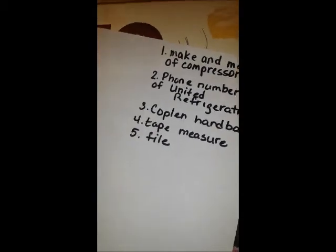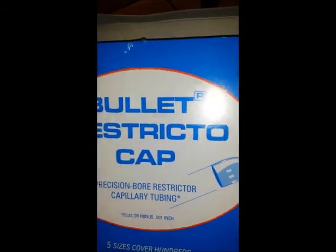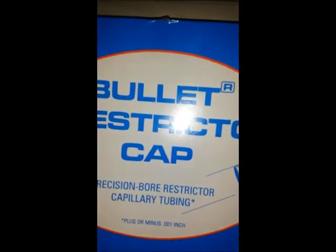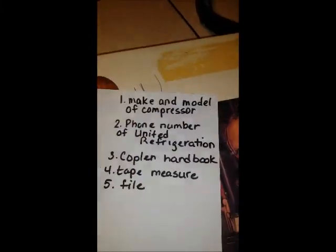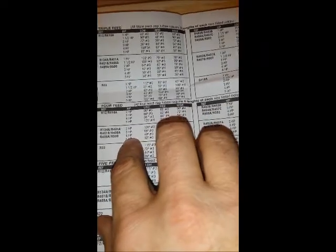You take that information and you buy one of these kits right here. The kit has a capillary tube inside of it. You open it up and take the capillary tube out. But what's more important is there's a chart there. And on that chart, you will find your 134A system.